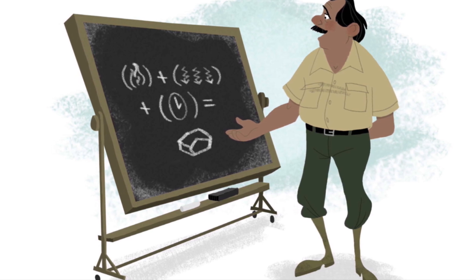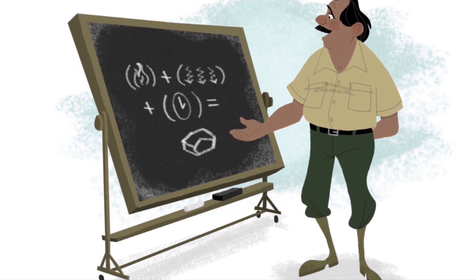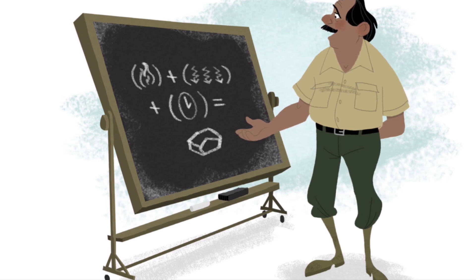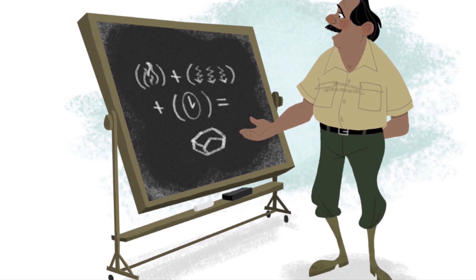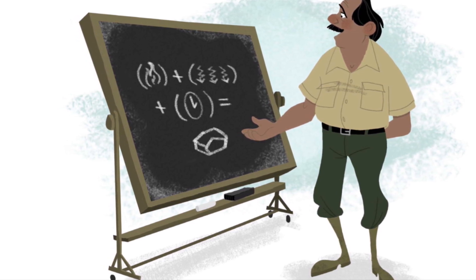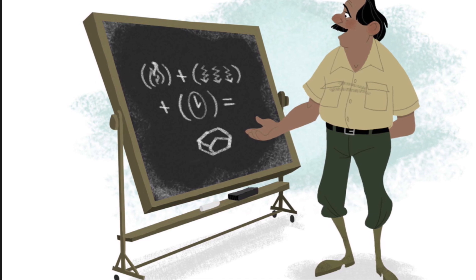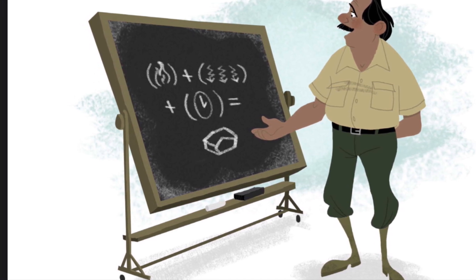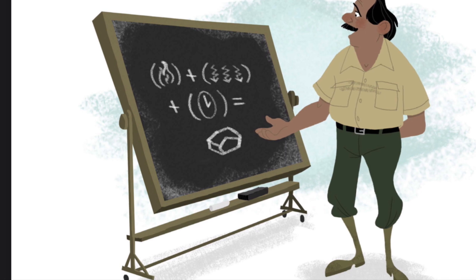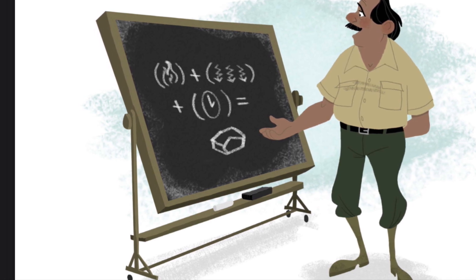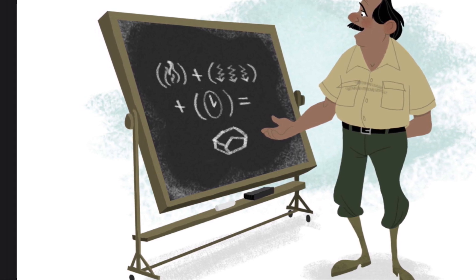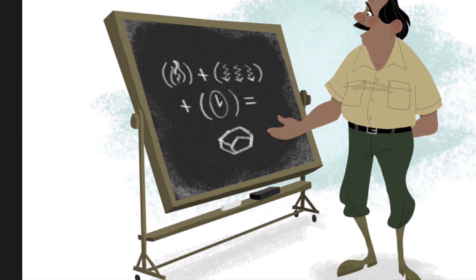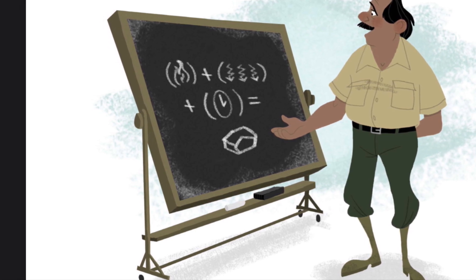Why do all these different minerals look the way they do? Each has its own story, and it gets pretty complicated. But you can bet that there were three basic things in common: heat, pressure, and time. These three factors play a role in the formation of every mineral.